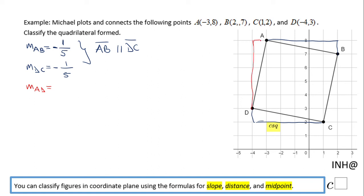And you notice the rise is 5 now and the run is 1, and it goes up from left to right so it's a positive. And the same for the other one, BC.